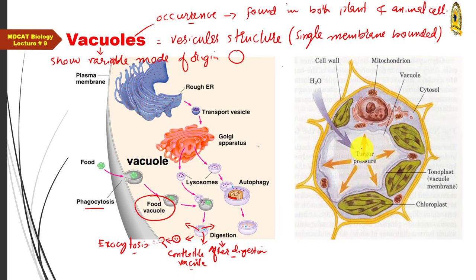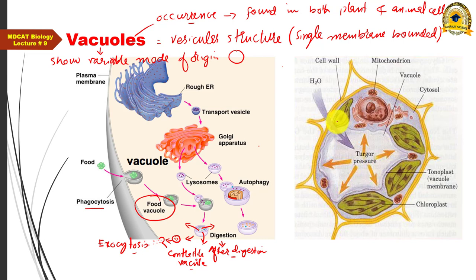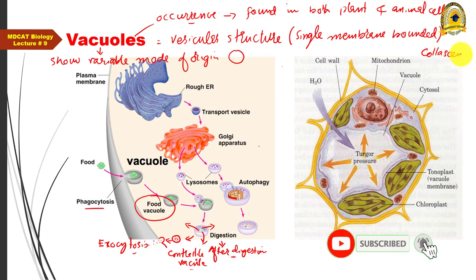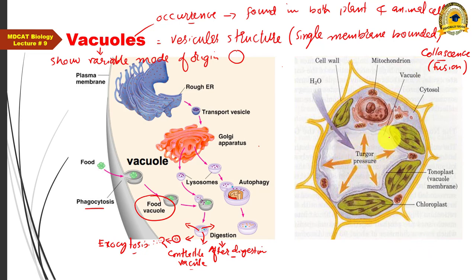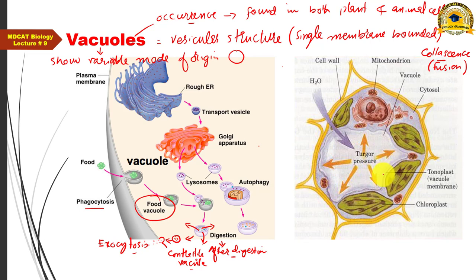In contrast, in a plant cell, a young plant cell just after cell division contains many small vacuoles in its cytoplasm. Gradually, these small vacuoles fuse and coalesce together to form one large central vacuole. This large central vacuole is the characteristic feature of the plant cell.